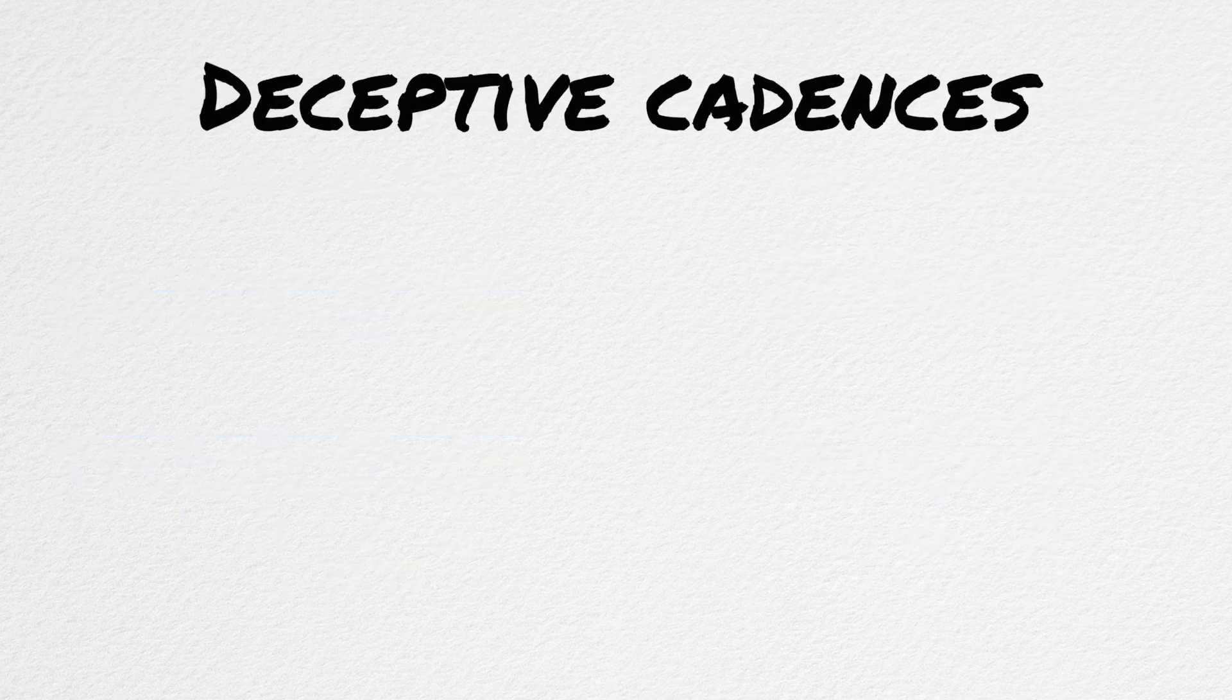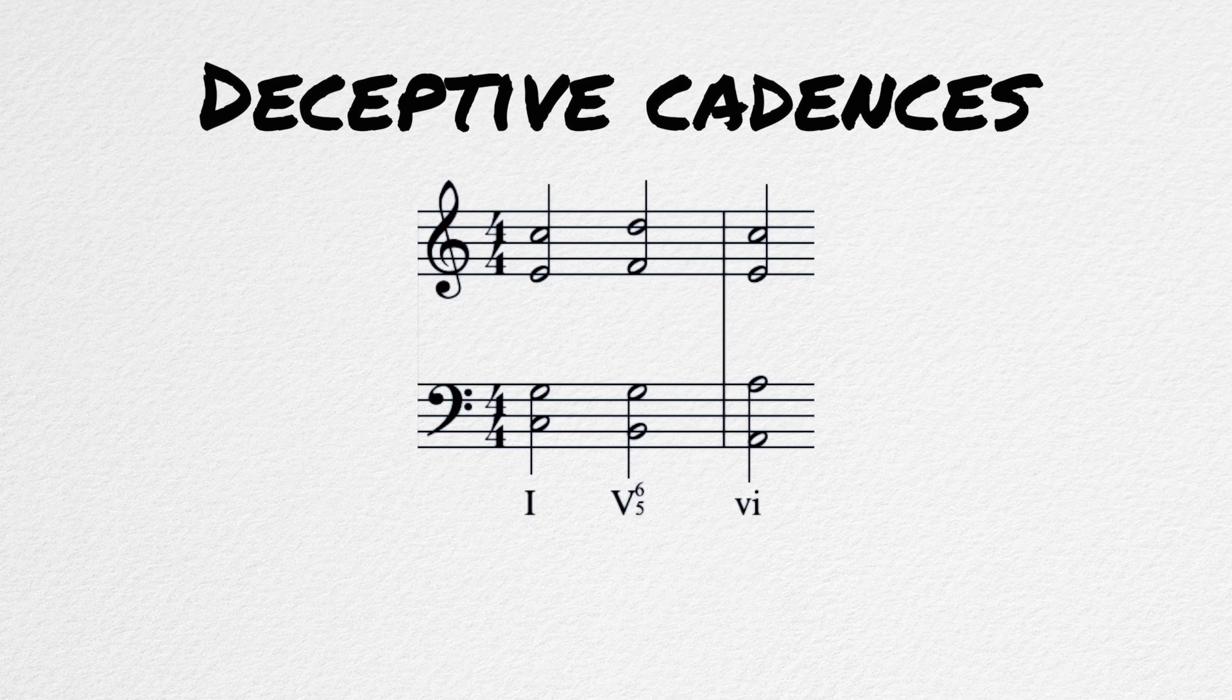It is possible to create a deceptive cadence with a secondary dominant chord. A deceptive cadence is the idea of a dominant chord resolving to the VI chord instead of back to the tonic. In the key of C, the dominant seventh, G7, wants to resolve back to C, but instead it can resolve to the sixth chord, A minor.